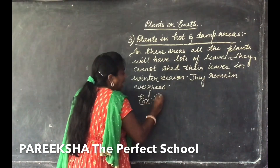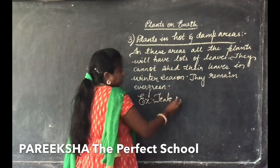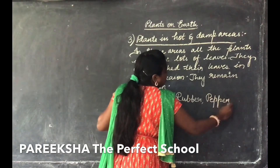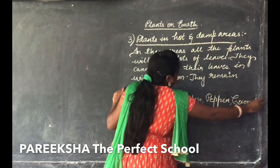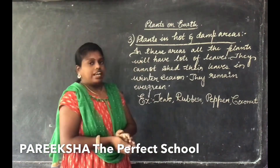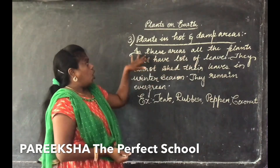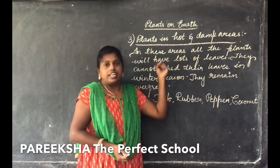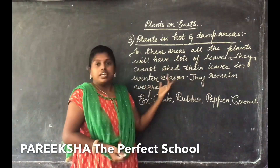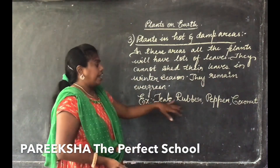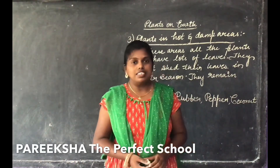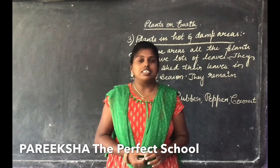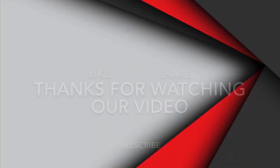The examples of plants in hot and damp areas are tea, rubber, pepper, and coconut. All these plants have lots of leaves, cannot shed their leaves in winter, and remain evergreen throughout the year. Today we discussed about plants in plains and plants in hot and damp areas. In the next class we are going to learn about plants in marshals and plants in desert areas.